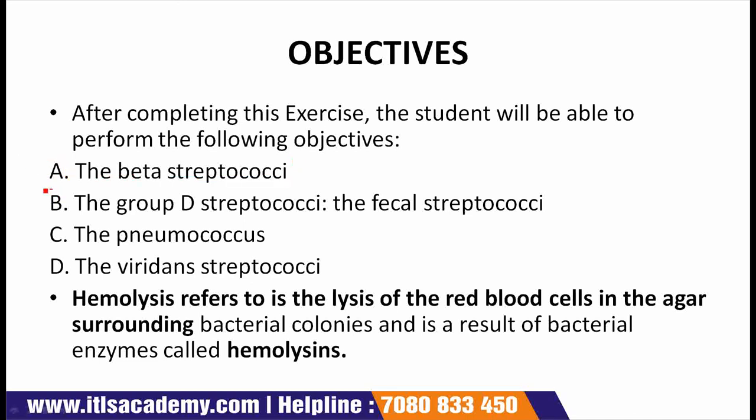Point 2 is the group D streptococci or the fecal streptococci. Results of the enterococci will include: first, identify an organism as an enterococcus and state the reason why when it is seen growing in SF broth or streptococcus fecalis broth and on bile esculin agar.